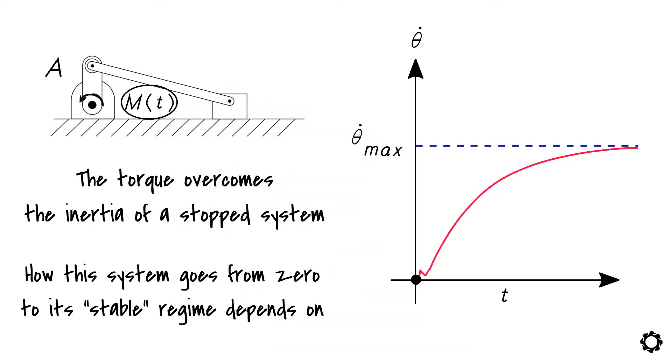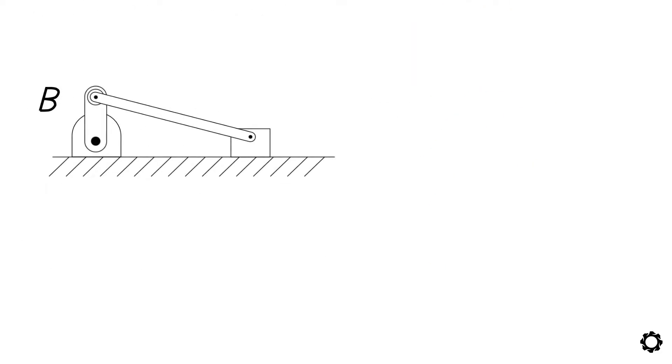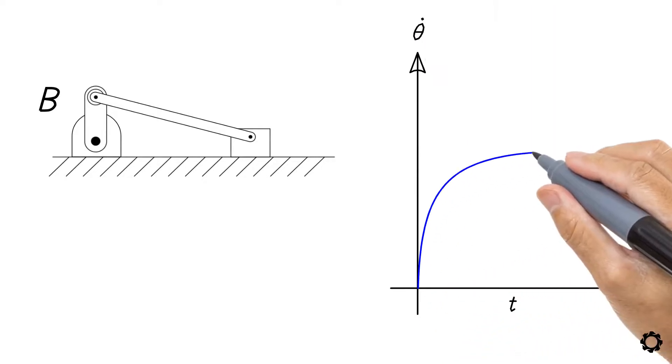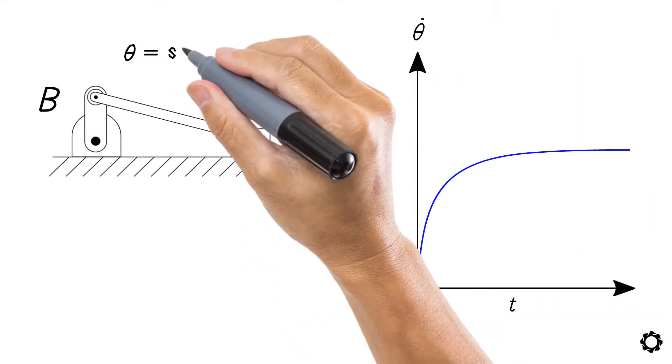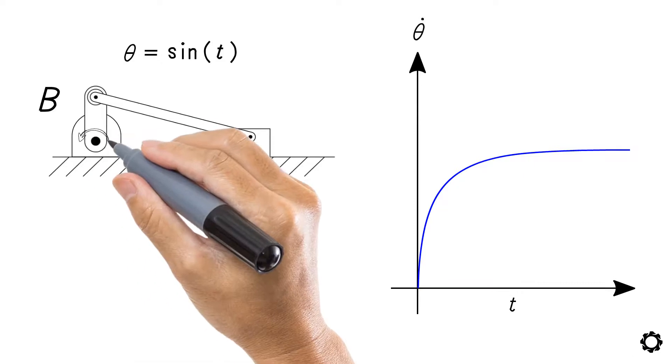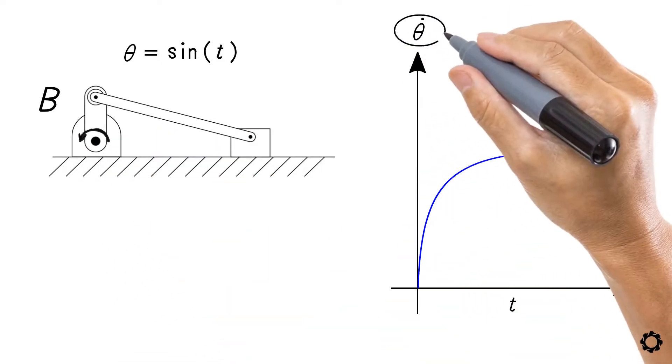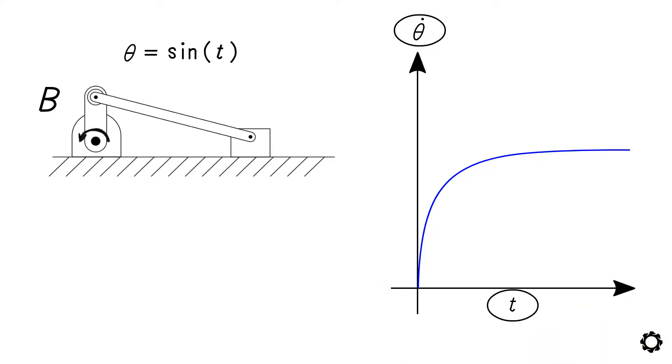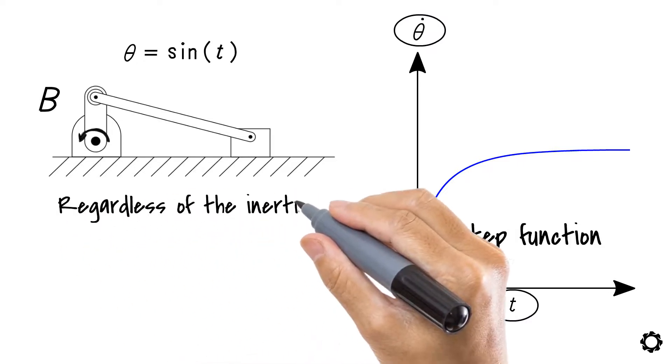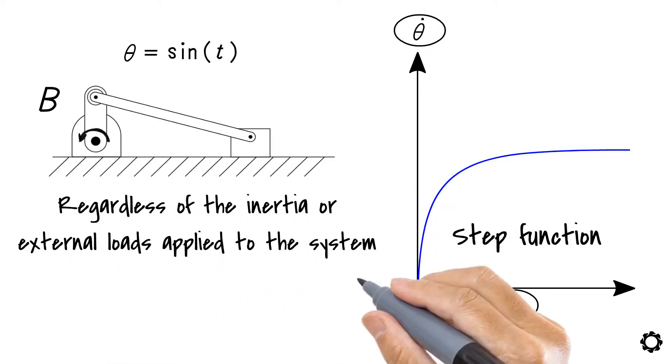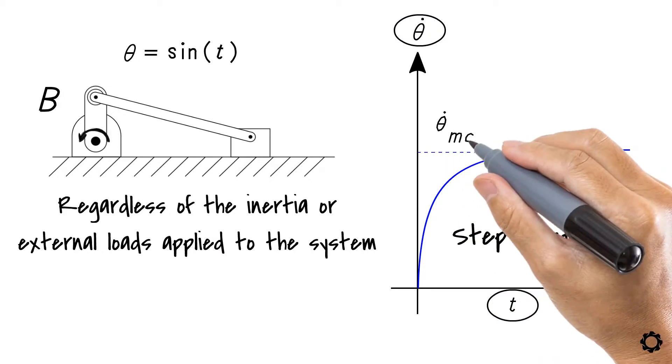In contrast to the velocity response of system A, the velocity response of system B will go from zero velocity to its prescribed velocity almost instantaneously. This is due to the imposed kinematic constraint on the system's crank. If we were to plot the value of this rotational velocity against time, the graph would resemble a step function. The case to consider here is that, regardless of the inertia or external loads applied to the system, the crank will rotate at this speed no matter what.